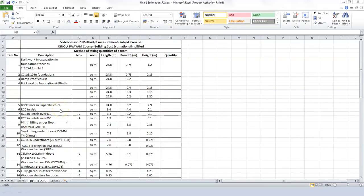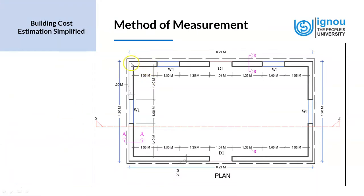Previously we had done the measurement and computation of quantities up to the brick work superstructure. Now we look at the RCC in slab — meaning the roof slab. For this we look at the dimensions of the roof slab from the elevations and plans. The end of the wall is 8.2 meters, and the roof slab projects by 0.1 meters on both sides, making the length 8.4 meters.